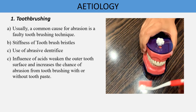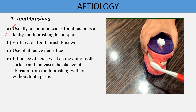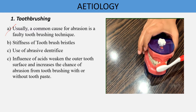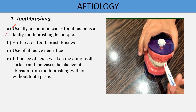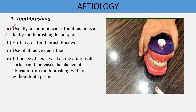The most common cause of abrasion is tooth brushing. Faulty tooth brushing — specifically the horizontal technique — results in abrasion facets in the cervical region. Other contributing factors include stiffness of toothbrush bristles (stiffer bristles cause more abrasion), use of abrasive dentifrices, and the influence of acids. Acidic beverages like colas weaken the outer tooth surface and increase the chance of abrasion from tooth brushing.